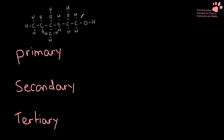This little one that is sitting on the end here is a primary alcohol group. We can work this out by looking at the carbon that it is attached to, because that carbon has two other hydrogens. This means it is a primary alcohol.